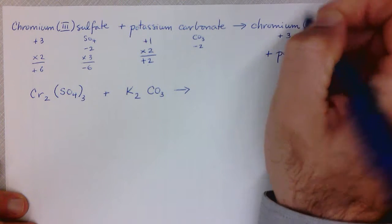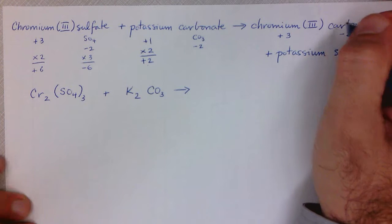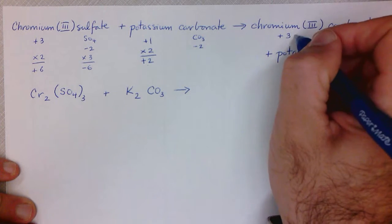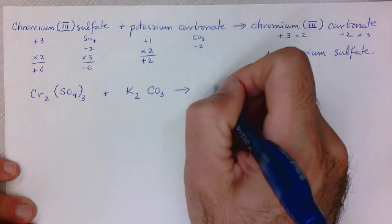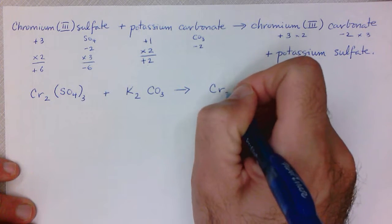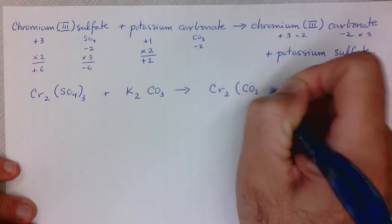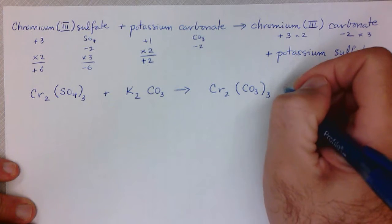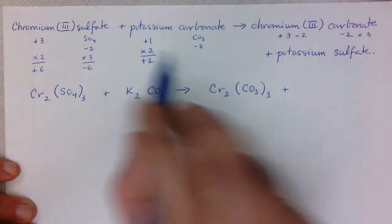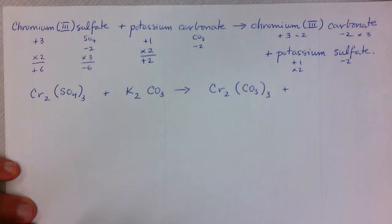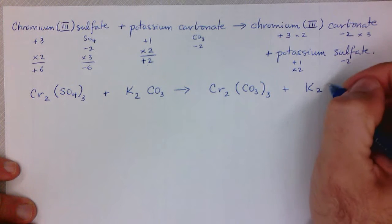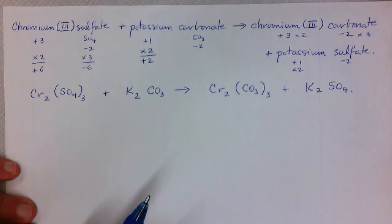Now let's look at the products. For chromium 3 carbonate: chromium is plus 3 and carbonate is minus 2, so similar to before we need two chromiums to get plus 6 and three carbonates to get minus 6, giving us Cr₂(CO₃)₃. Lastly, for potassium sulfate: potassium is plus 1 and sulfate is minus 2, so we need two potassiums for a neutral compound, giving us K₂SO₄.